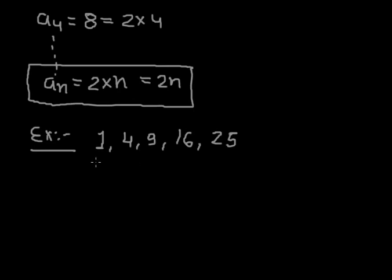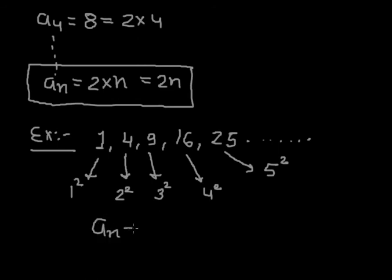Now for sequence, first of all, definite order - you can see all are in ascending order. Secondly, there should be some specific rule. The first term can be written as 1 square, the second term can be written as 2 square, the third term can be written as 3 square, the fourth term can be also written as 4 square, and the last fifth one can be written as 5 square.